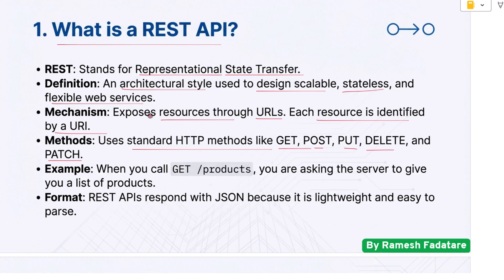A simple example: when you call GET /products, you are asking the server to give you a list of products. REST APIs respond with JSON because it is lightweight and easy to parse.